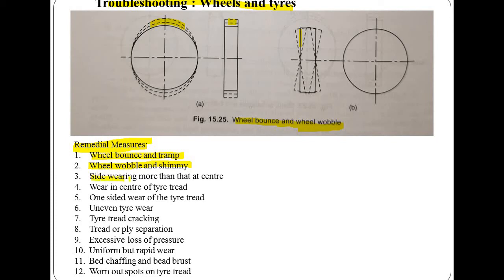The third issue is side wearing more than at center. If tire pressure is low, inflate to correct pressure. The fourth is wear in the center of the tire tread. If tire pressure is higher than required, deflate to correct pressure, and if lack of rotation is detected, rotate the tires. The fifth is one-sided wear of the tire tread. If sagging is on the axle, check and rectify. If incorrect camber angle, check and adjust correctly. If continuous driving on high camber roads, avoid it.